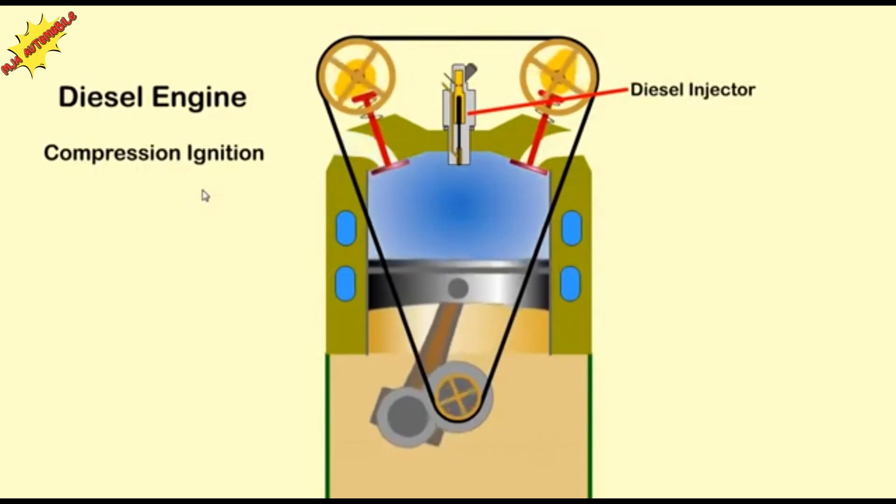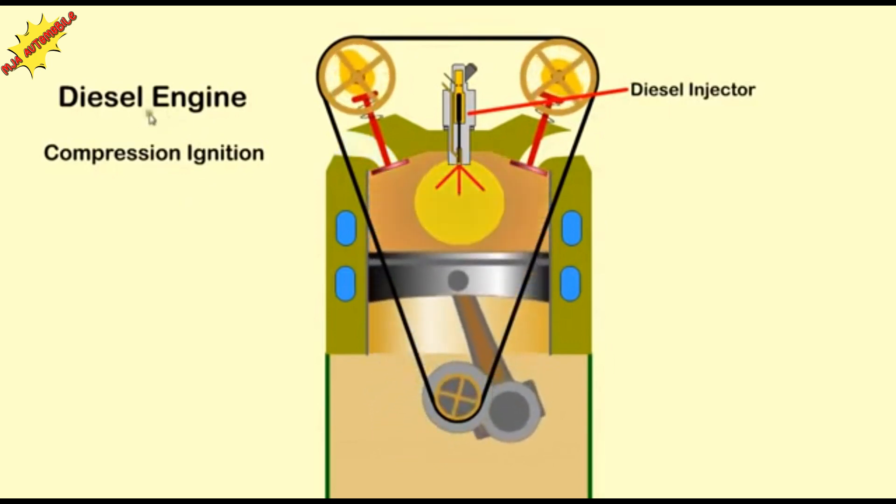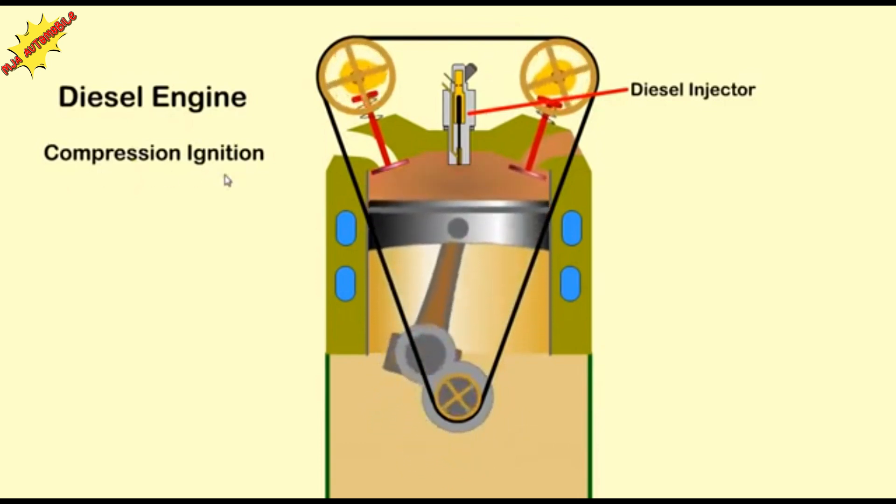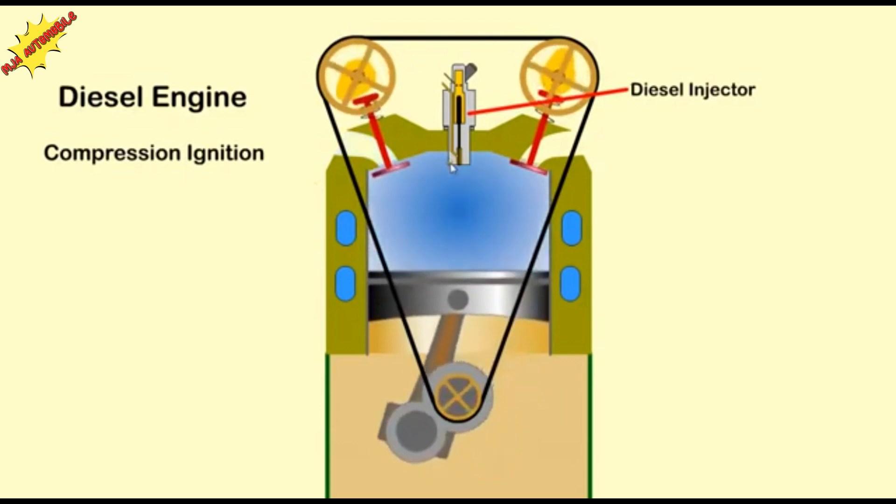So far we have dealt with SI, or spark ignition engines. A diesel engine is called CI, or compression ignition engine, as they rely on the high pressure charge to self-ignite and don't need a spark plug.